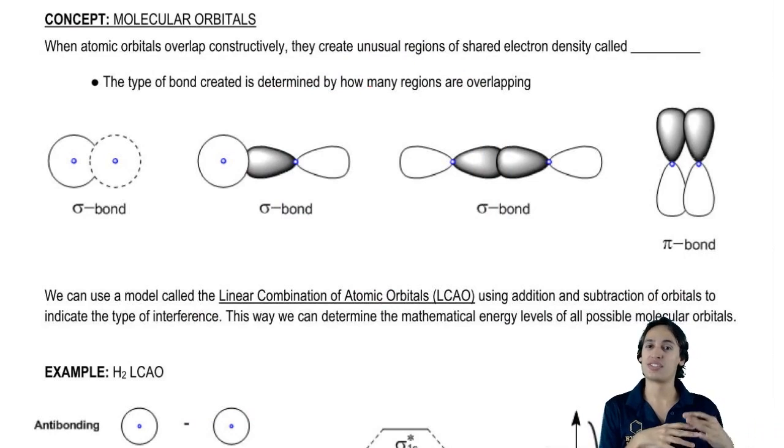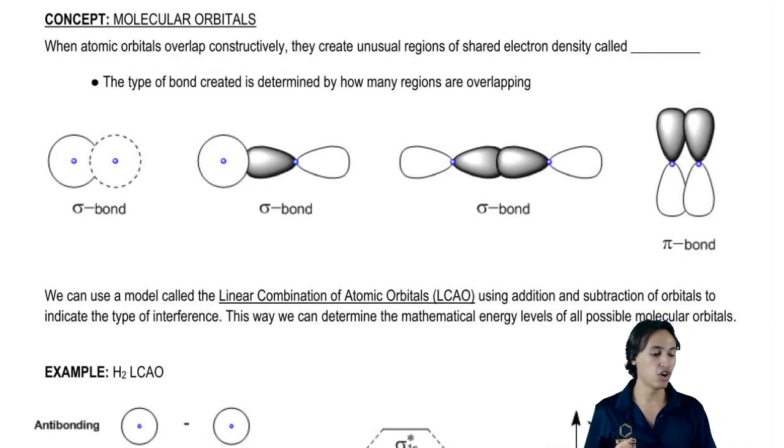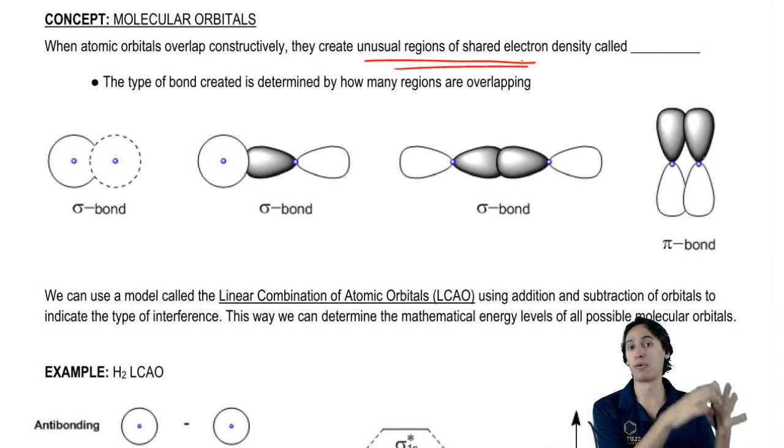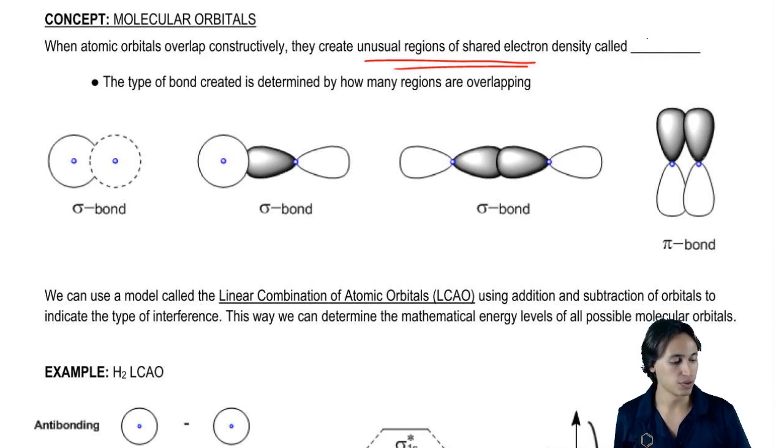We were just talking about constructive and destructive interference. When things constructively interfere, they create unusual regions of shared electron density. That's just another way of saying higher probability, called bonds.